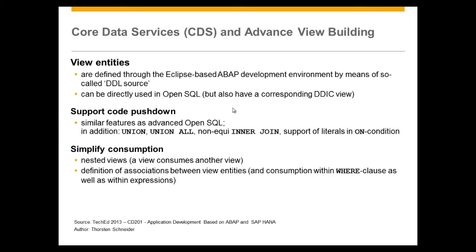What is Code Data Services and Advanced View Building? Advanced View Building supports code push down and also simplifies the consumption of relational database models. Today you define views in the ABAP dictionary via transaction SE11, but these views are quite restricted. For example, you can only define inner joins for database views. Outer joins are available only for help and maintenance views. You cannot do aggregation in views, and you cannot nest views.